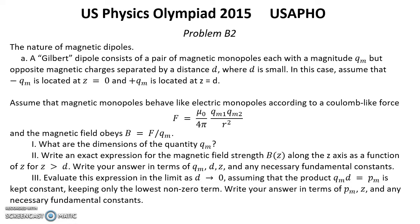Question 1: What are the dimensions of QM? Question 2: Write an exact expression for the magnetic field strength BZ along the Z axis as a function of Z for Z greater than D, in terms of QM, D, Z, and any necessary fundamental constants. Question 3: Evaluate this expression in the limit as d→0, assuming the product QM·D = PM is kept constant, keeping only the lowest non-zero term, written in terms of PM, Z, and any necessary fundamental constants.